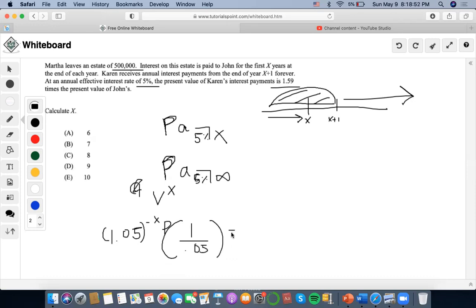Equals to P times 1 minus V to the N, which is denoted as V to the X over 0.05, and it says that it's 1.59 times this whole amount, right?